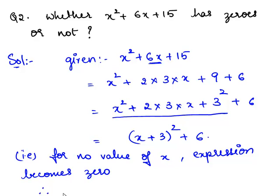Therefore, x square plus 6x plus 15 has no zero.